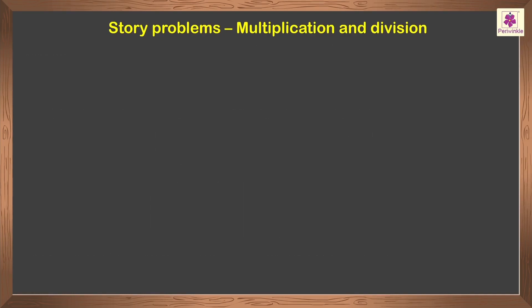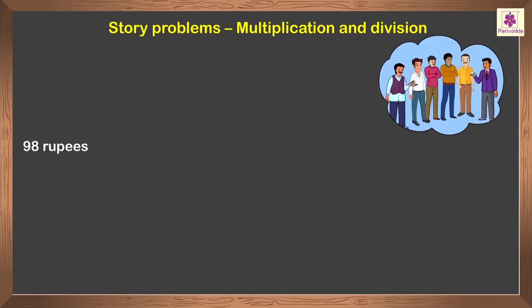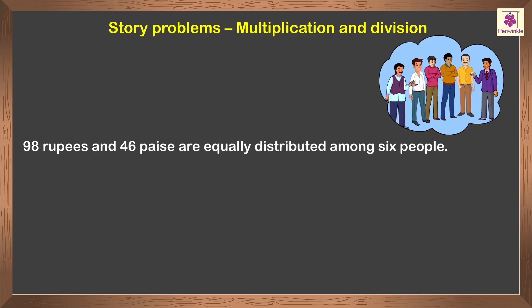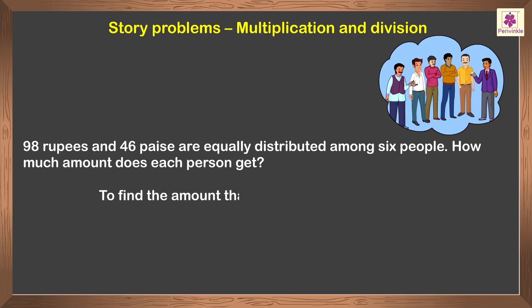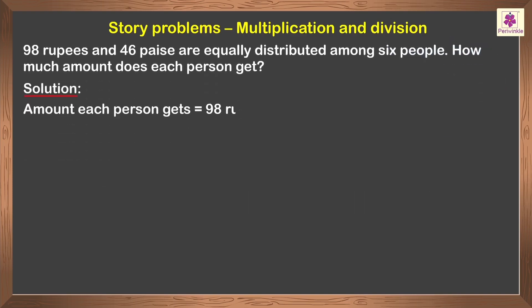Now, let us solve another story problem. 98 rupees and 46 paise are equally distributed among 6 people. How much amount does each person get? Here, we divide to find the amount that each person gets. That is, 98 rupees and 46 paise divided by 6.